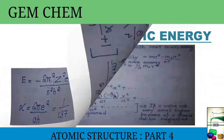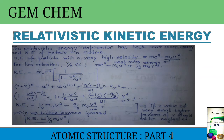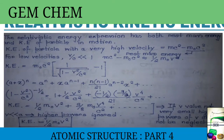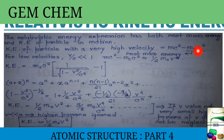Now we will come to relativistic kinetic energy and derive how it is obtained. The relativistic energy expression includes both rest mass energy and the kinetic energy of the particle in motion. So the kinetic energy of a particle with very high velocity is given by: KE equals mc² minus m₀c², where m₀c² is the rest mass energy.